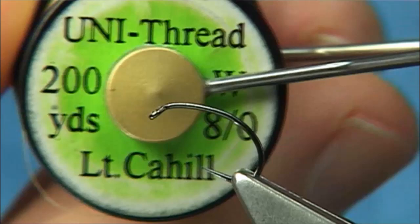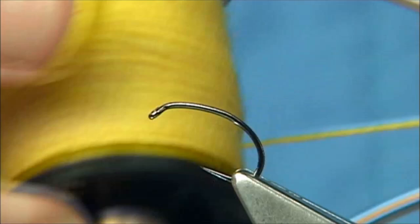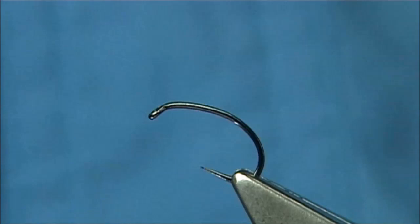The thread I am going to be using, this is the Uni Thread Light Cahill Nato. It is a yellow yarn, this is a white yarn that I had bought and dyed. I put it on an old spool so that I could use it and obviously onto a bobbin holder.